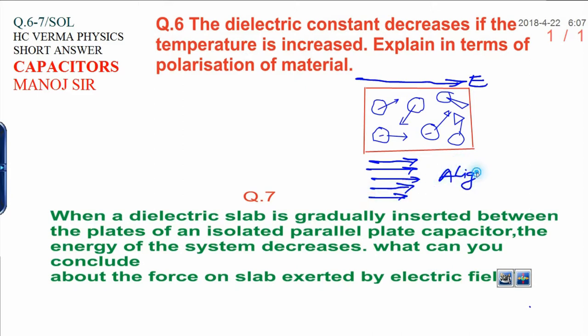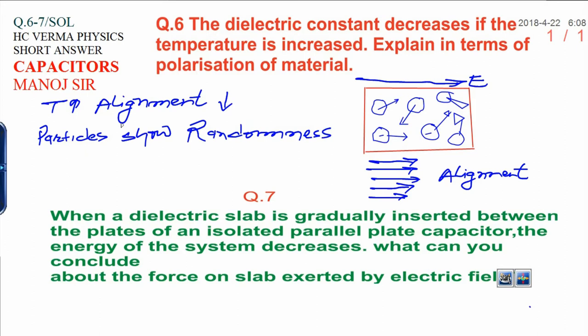But when temperature is increased, alignment gets decreased. The reason is that by increasing the temperature, particles inside the specimen will show random motion. This randomness disturbs the alignment.